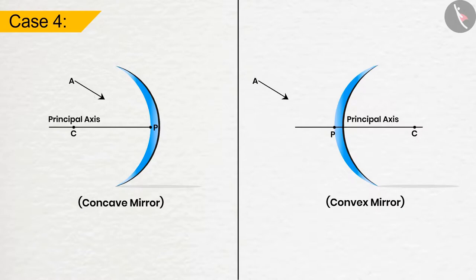Case 4: If the ray of light falls obliquely to the principal axis towards the pole, then it will be reflected back obliquely, making an equal angle to the principal axis.